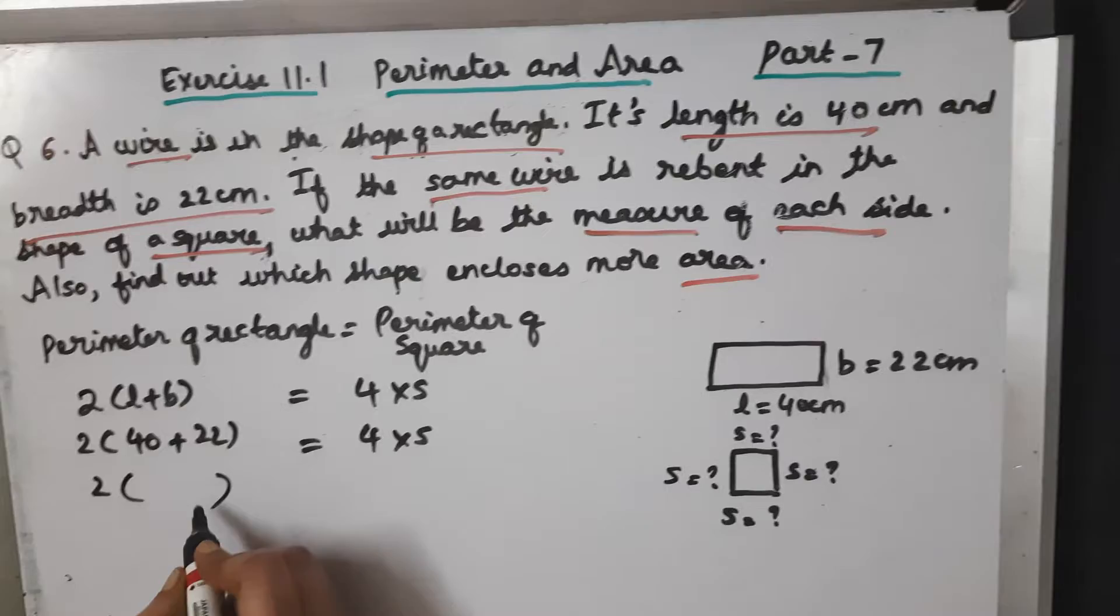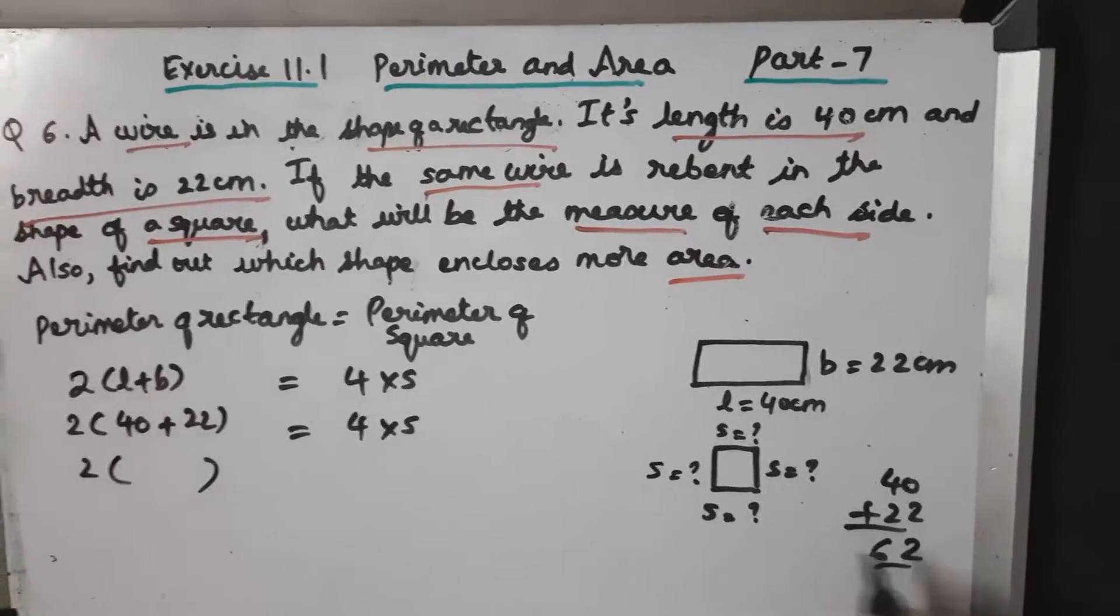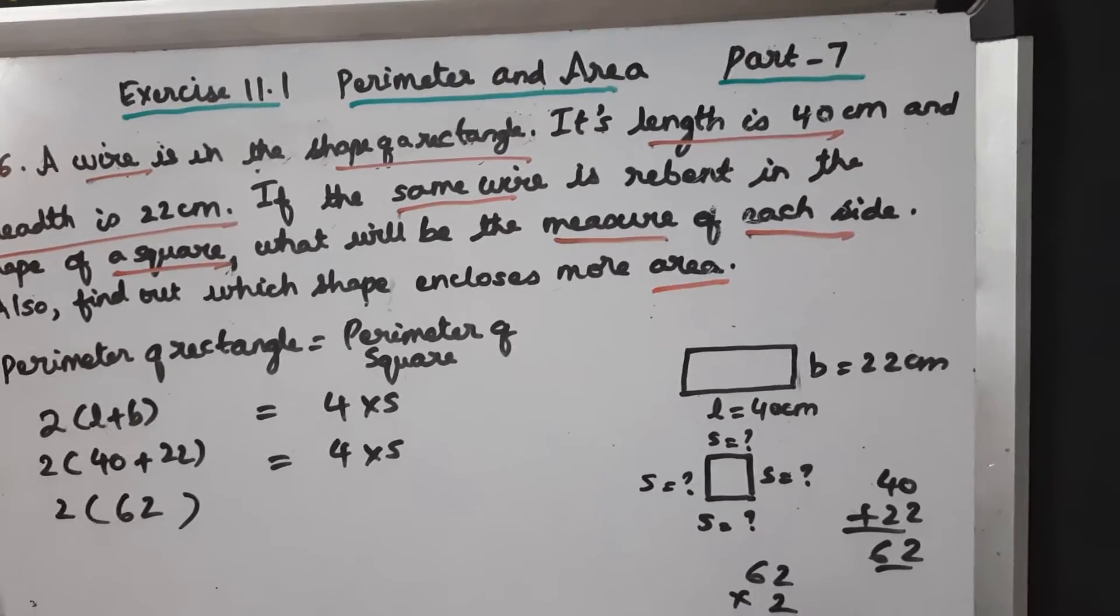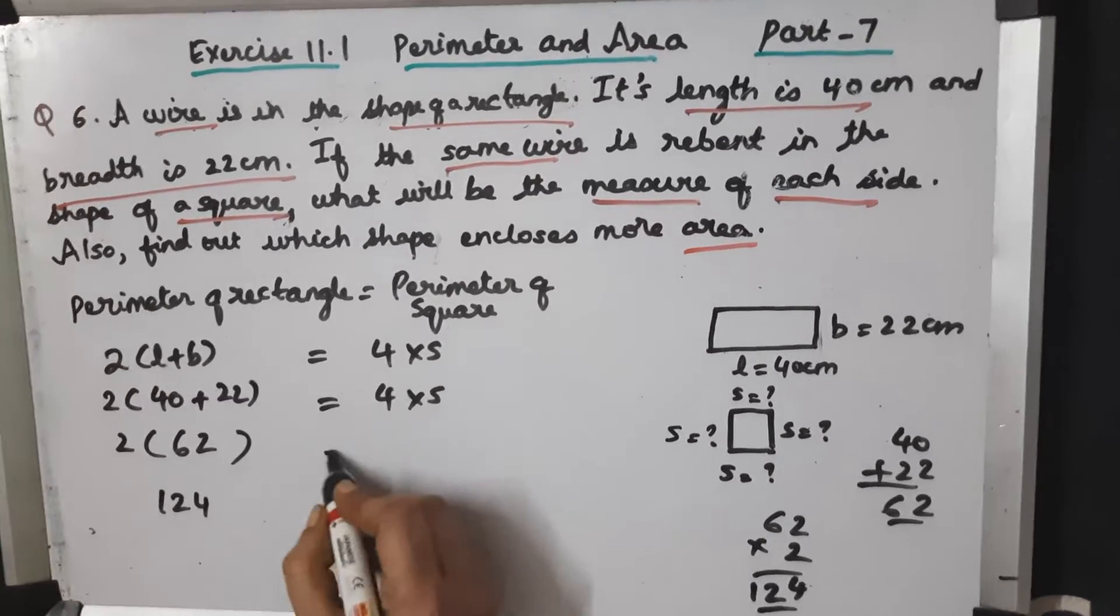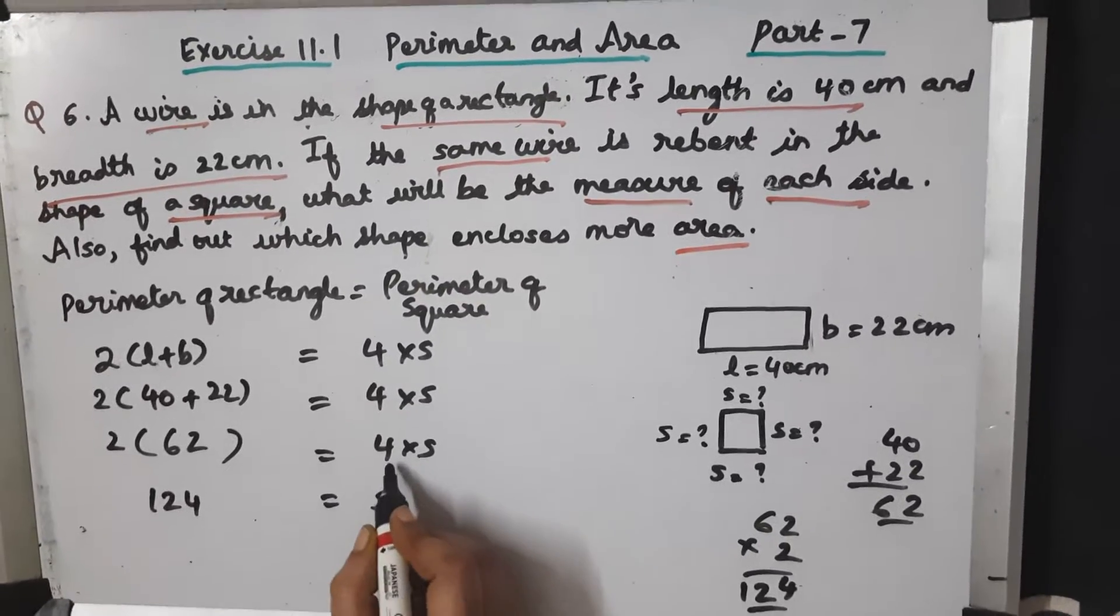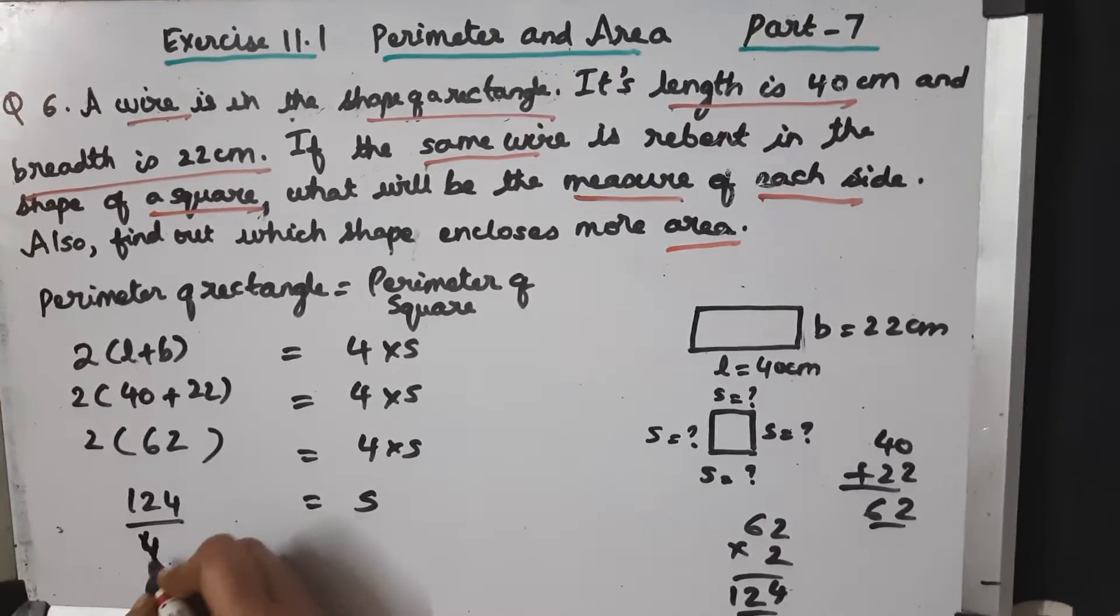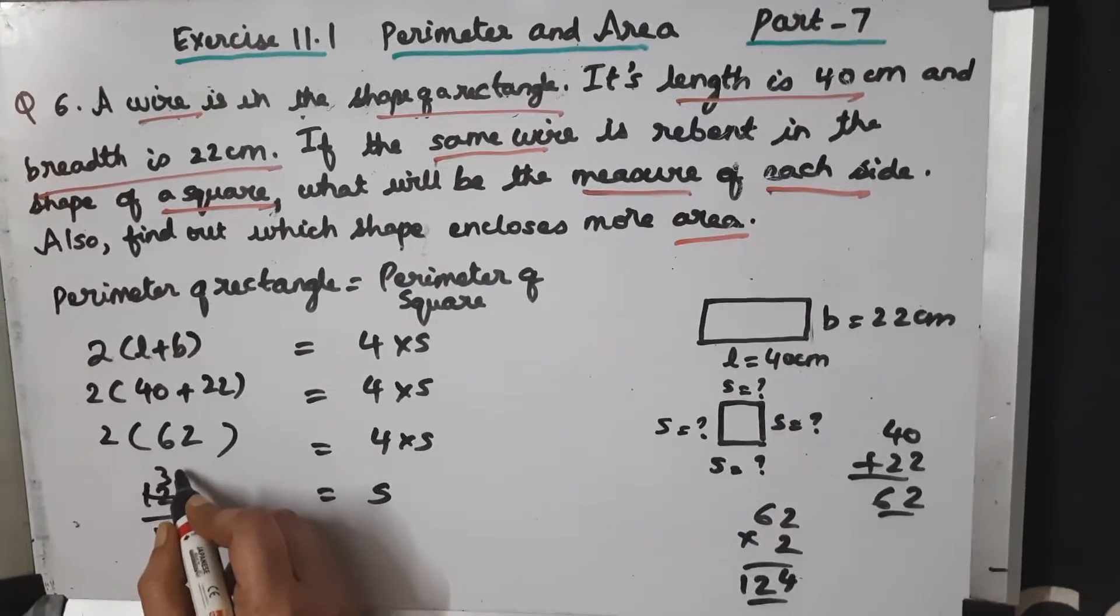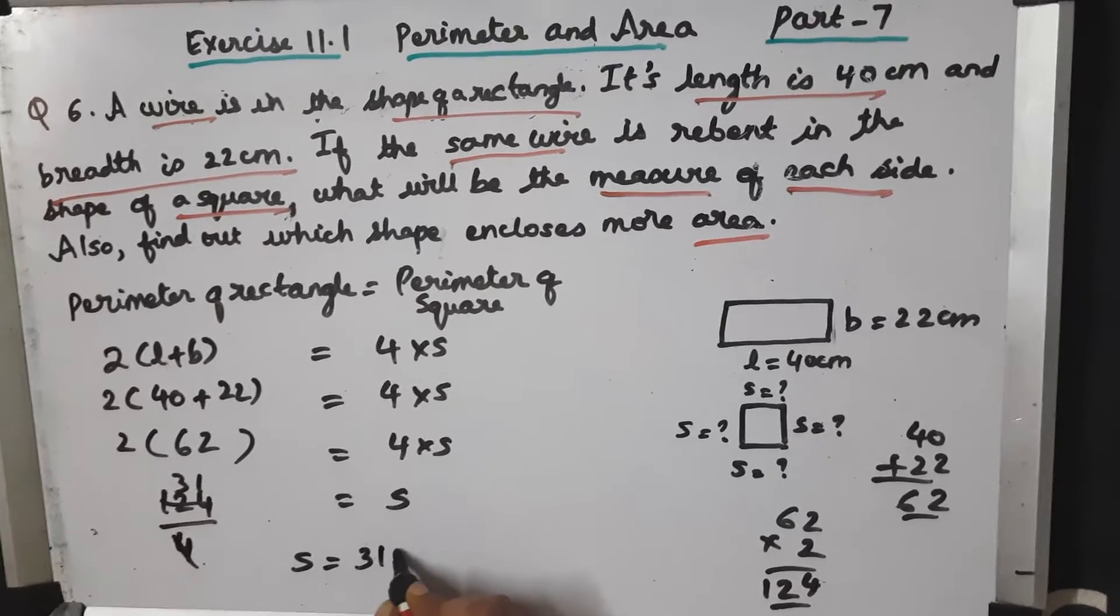First solve the bracket. 40 plus 22 is 62, 2 into 62 is 124. Here it is 4 into S. If 4 into S is multiplying here, if it goes to the other side it divides. 124 divided by 4 equals 31. So we got the side as 31 centimeters.